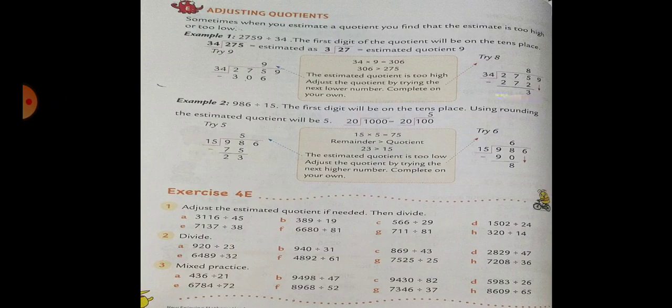Example 2: 986 divided by 15. The first digit will be on the 10th place. Using rounding, the estimated quotient will be 5. We will try first with 5.